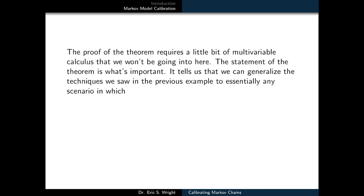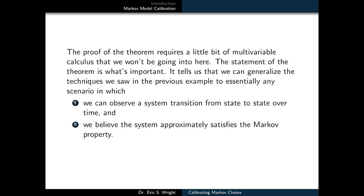The proof of the theorem requires a little bit of multivariable calculus that we won't be going into here. The statement of the theorem is what's important. It tells us that we can generalize the techniques we saw in the previous examples to essentially any scenario in which we can observe a system transition from state to state over time, and we believe the system approximately satisfies the Markov property.